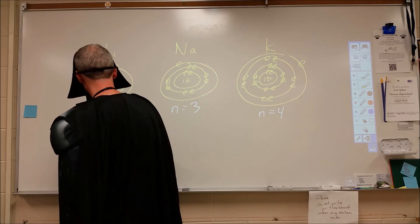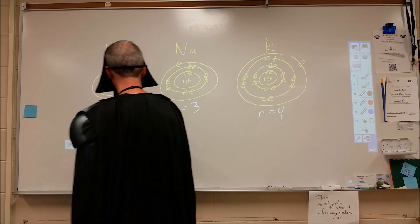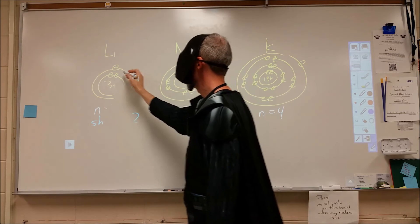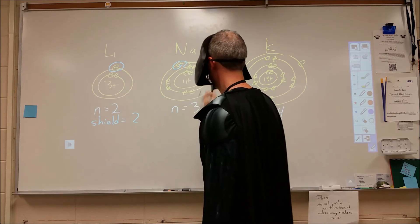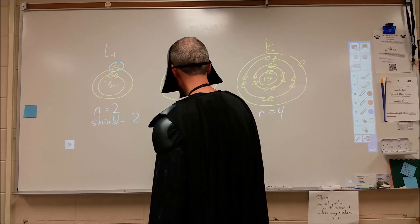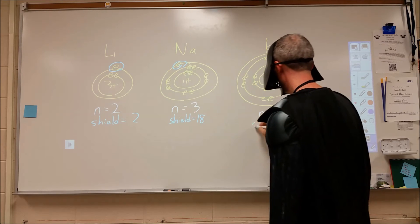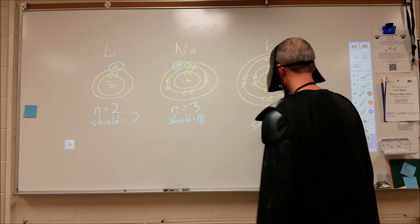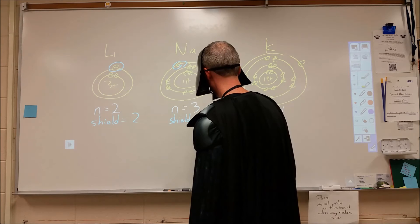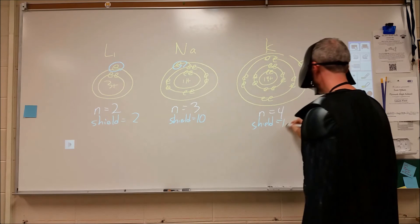For the shielding, we have two electrons shielding our valence electron here. We have 10 electrons shielding in the sodium, and 18 in the potassium.